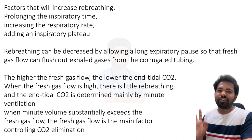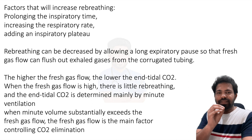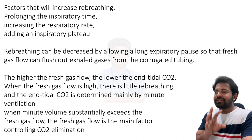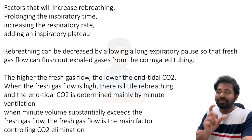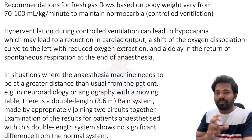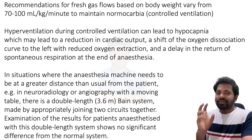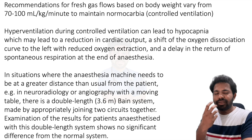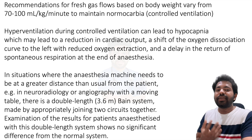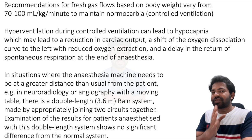The higher the fresh gas flow, the lower the end-tidal carbon dioxide (ETCO2), because expired gases are expelled with less re-breathing. When the minute volume substantially exceeds the fresh gas flow, fresh gas flow becomes the main factor controlling ETCO2 and carbon dioxide elimination. Recommendations during controlled ventilation are 70–100 ml/kg/min to maintain normocarbia. Bain circuit is the circuit of choice for controlled ventilation because there is no wastage of fresh gas flow — it is more economical.